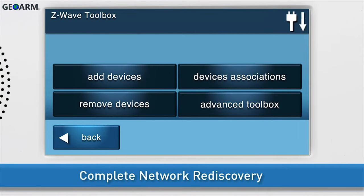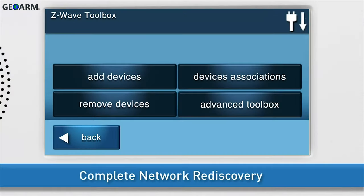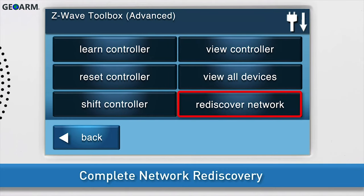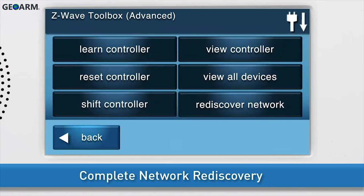Lastly, complete a network rediscovery. During network rediscovery, the panel will recreate its Z-Wave routing table and optimize the mesh Z-Wave network. To initiate a network rediscovery, navigate to the Z-Wave toolbox, then press Advanced Toolbox, then press Rediscover Network. The panel will display a message that it is rediscovering the Z-Wave devices, then automatically redirect you back to the Advanced Z-Wave Toolbox.